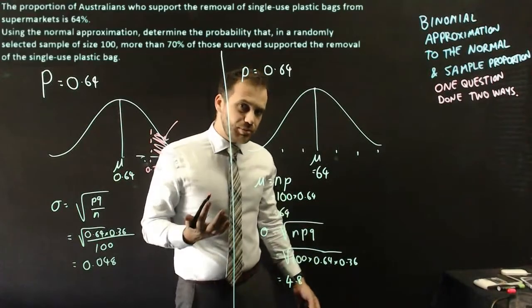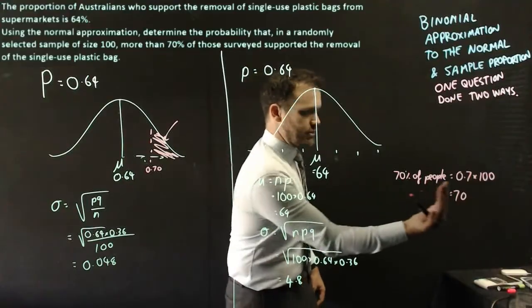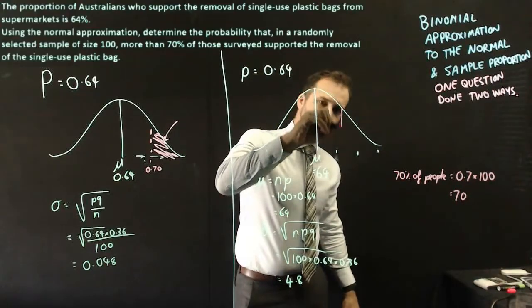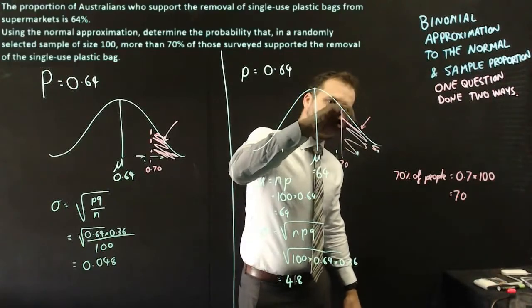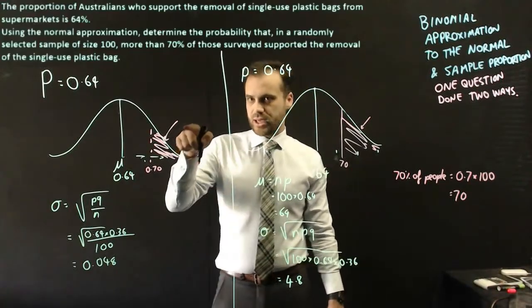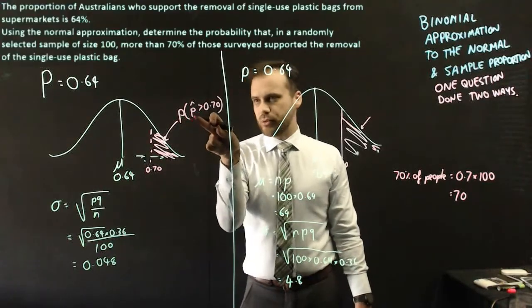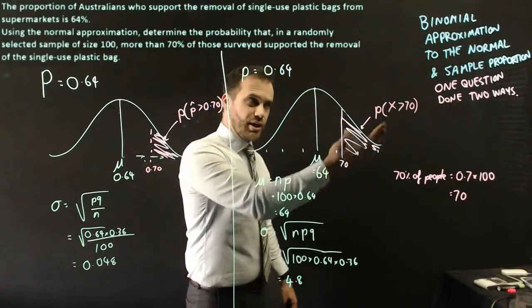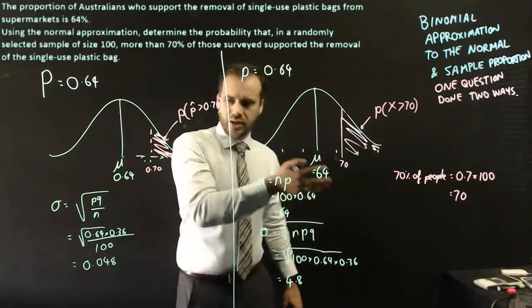But if it was a slightly more complicated number, we might have to do a little bit of a calculation. 70% of people, 0.7 times 100, 70 people. Here, I'm trying to find that area there. And they're going to be my probabilities. This calculation here is the probability that the sample proportion is greater than 0.7. And this is the probability that the random variable x is greater than 70.